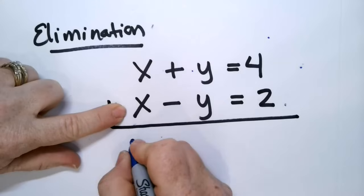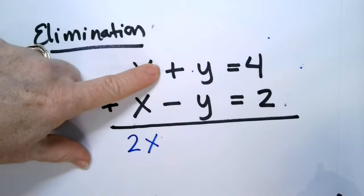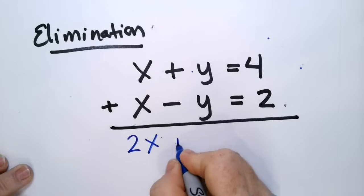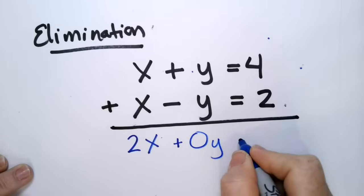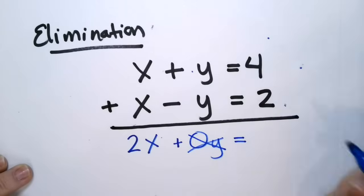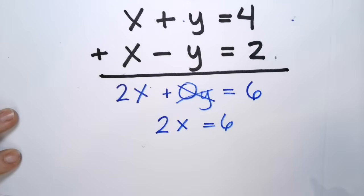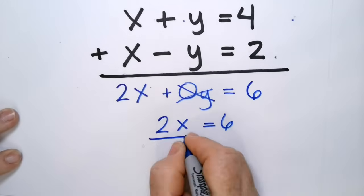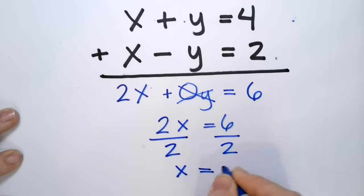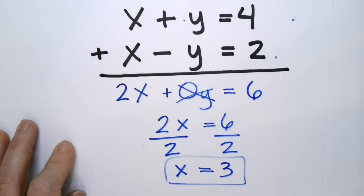x plus x is 2x, plus 1y minus 1y. I am liking that. That is a 0y. So you can cross it out. Equals, what's 4 plus 2? 6. Are you seeing what I'm seeing? 2x equals 6. How do we get x by itself? You divide by whatever's in front of the x. x equals 6 divided by 2 is 3. Did that look easy? What is y equal to? What do you have to do?